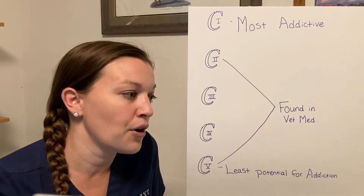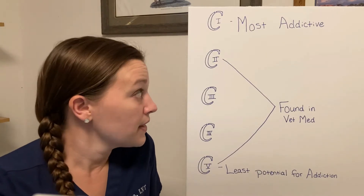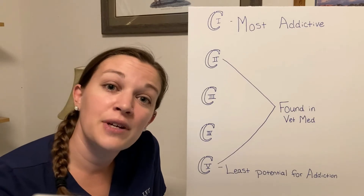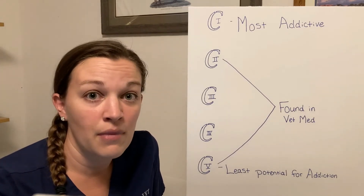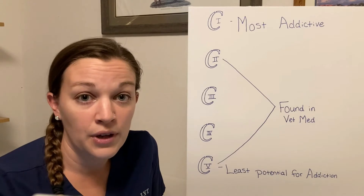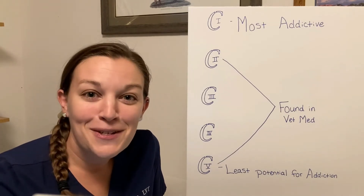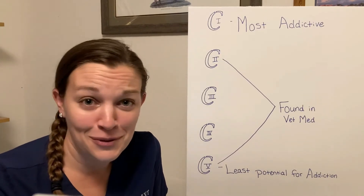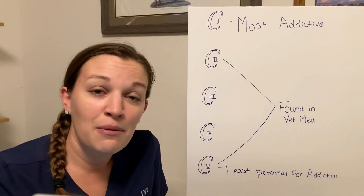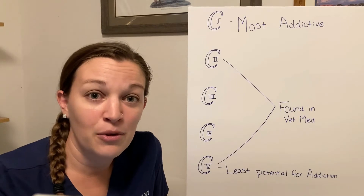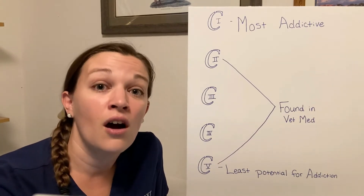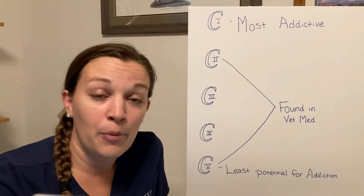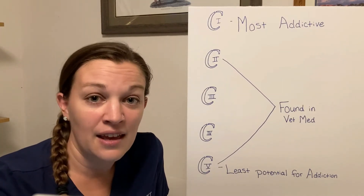The drugs on the schedule include benzodiazepines, dissociatives, barbiturates, and most opiates. If you don't know what any of those classes are or the names of the drugs within them, that's no problem — that's not what we're learning here today. Today we're going to set you up with the knowledge to simply know that certain substances are controlled drugs and do need to be given to the proper personnel within your hospital to be taken care of accordingly.